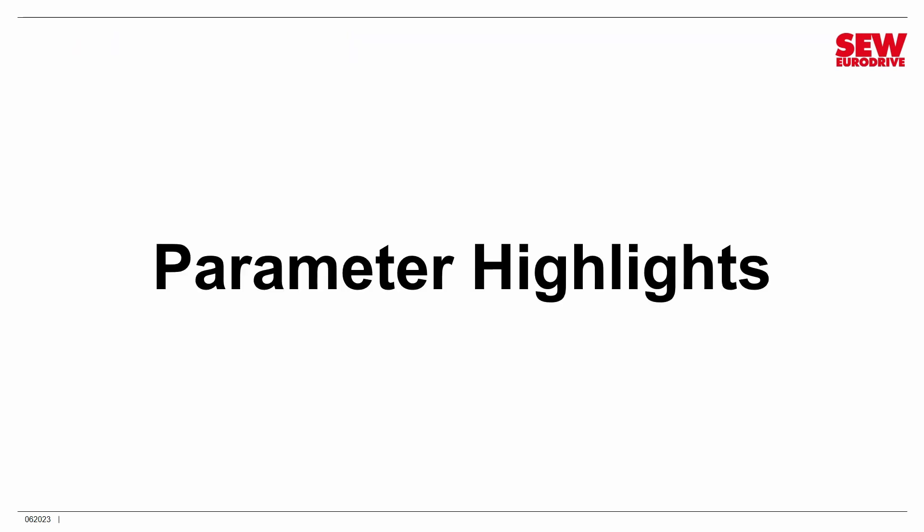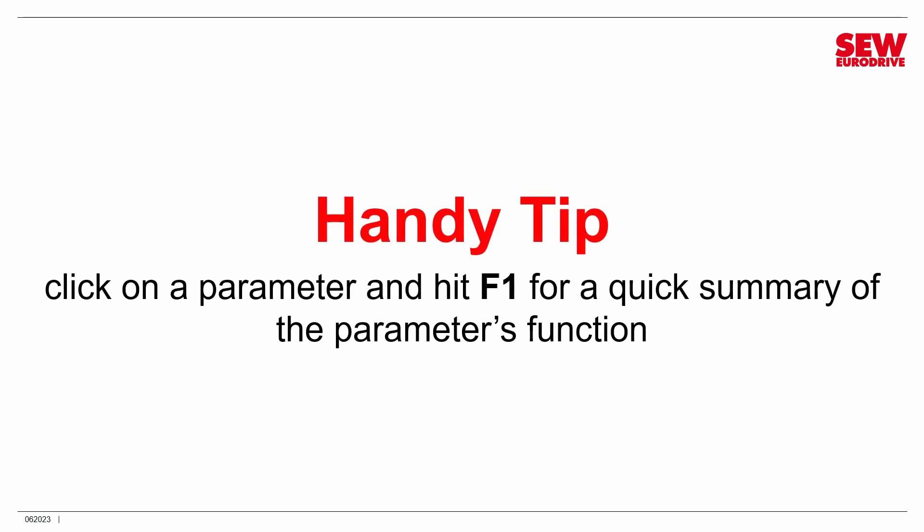Now we're going to look at the various parameters available. I'm not going to cover every single parameter, but I do want to cover the key parameters you'll change a lot. We'll go over major groups and talk about the highlight parameters within them. Before I do, here's a handy tip for Movitools Motion Studio: if you want to know what a parameter does in the parameter tree, just click on it and hit the F1 key — that will give you a quick help screen summary.